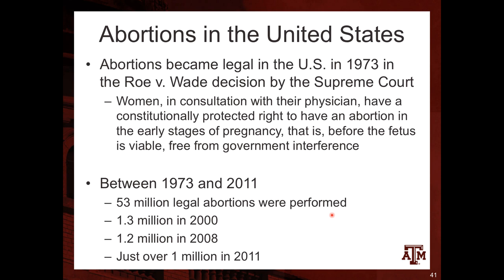In terms of abortions in the US, abortion became legal in 1973 with the Roe v. Wade decision by the Supreme Court, giving women in consultation with their physician a constitutionally protected right to have an abortion in the early stages of pregnancy before the fetus is viable. Between 1973 and 2011, 53 million legal abortions were performed in the US — 1.3 million in 2000, 1.2 million in 2008, and just over 1 million in 2011, showing a declining trend in more recent years.